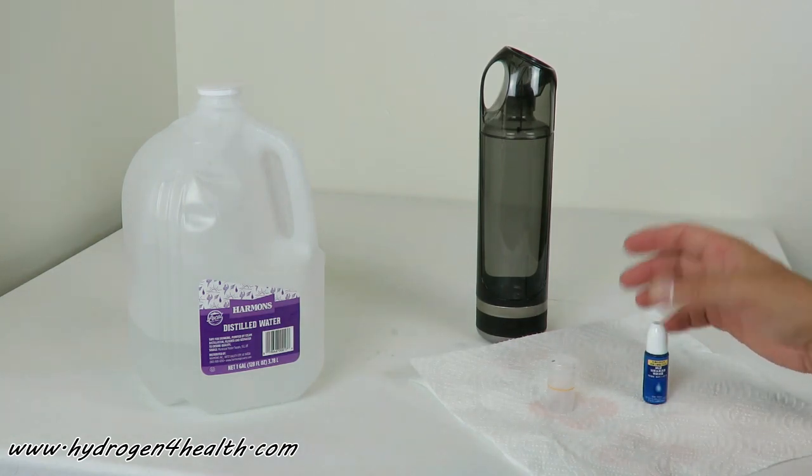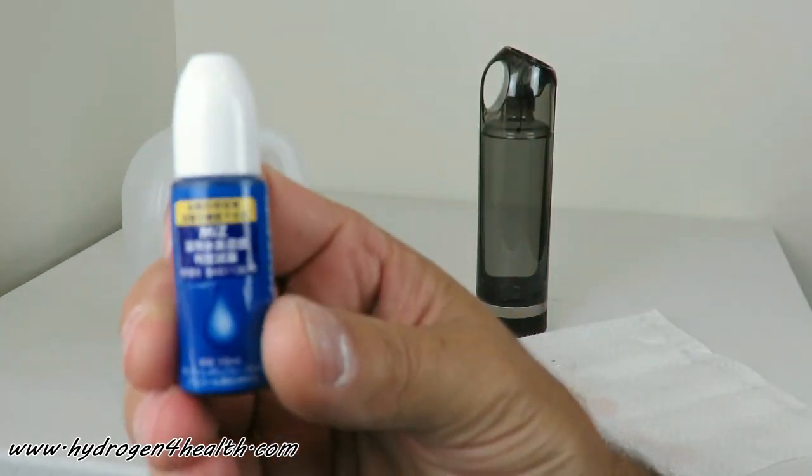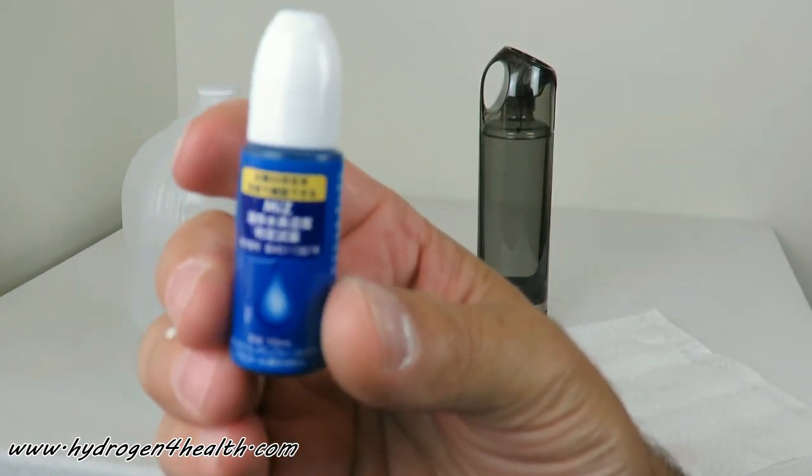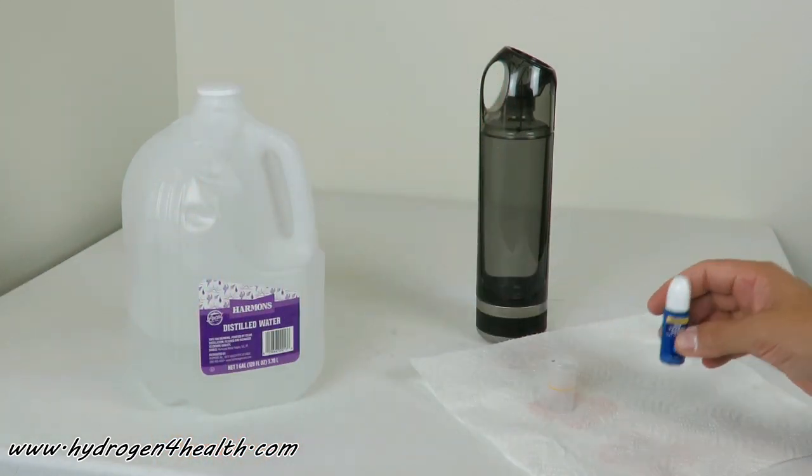So what we're going to do today is we're going to fill it up, we're going to run it for its cycle, and then we're going to test it with these. This is MIZ, the company that makes H2 blue and they're out of Japan.